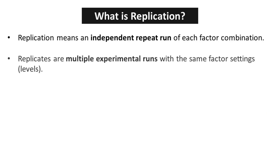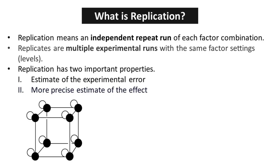What is replication? Replication simply means conducting independent repeat runs of each factor combination. In other words, it involves performing multiple experimental runs with the same factor settings. Replication holds two important properties: the first is the estimate of the experimental error, and the second is the more precise estimate of the effect. Through replication, researchers can validate initial findings and refine the accuracy of the effect being studied.